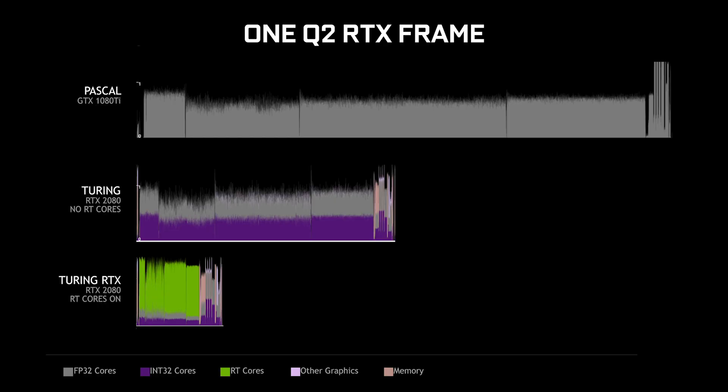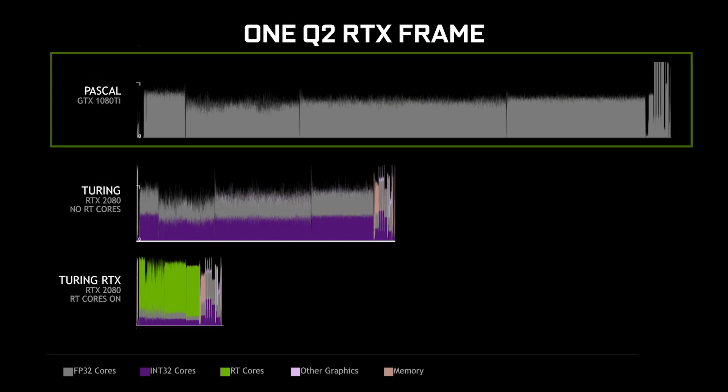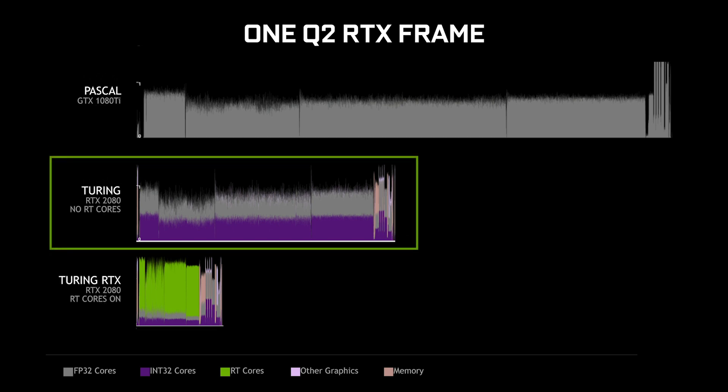To give you a feel for the computational power required to do this, let's dive into a data capture of a single frame from Quake 2 RTX. What we've done is used our performance analysis tools to capture and analyze the frame. The topmost graph shows a GeForce GTX 1080 Ti, and you can see there's a long horizontal section — that's ray tracing and path tracing being done entirely in software. The next chart down is the same analysis but based on the Turing architecture, using a GeForce RTX 2080, again running ray tracing in software.